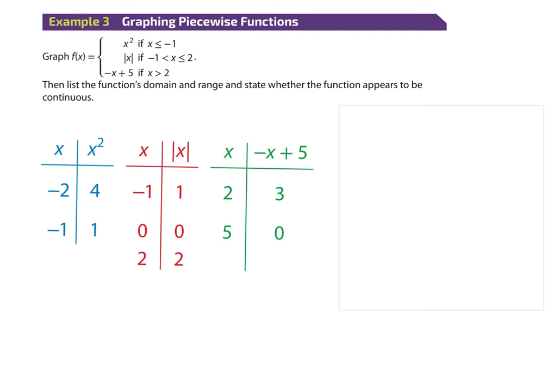After the V, we have a linear function piece with a negative slope — everything greater than two. Two was included in the absolute value domain, but not in the linear domain. Plugging in two: the absolute value gives y=2, but the linear piece gives y=3. They're different — so I pick up my pencil, jump to three, and draw an open circle there. The open circle indicates I'm starting from that point but not including it, like on a number line. Then I travel down, reaching zero at x=5, continuing infinitely.